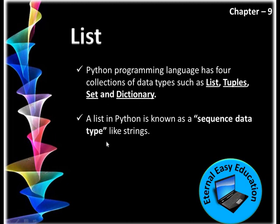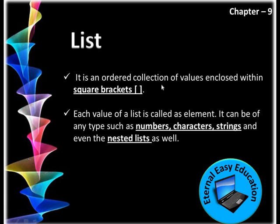What is a list? First, it is a data type. In Python, a list is known as a sequence data type, like strings. A string is a collection of characters or alphanumeric values. Similarly, in Python a list is an ordered collection of values enclosed within square brackets — just like an array in C++. Each value of a list is called an element, and it can be of any type such as numbers, characters, strings, and even a nested list.